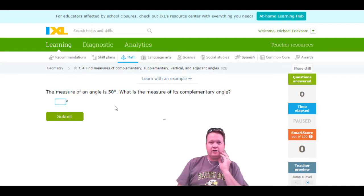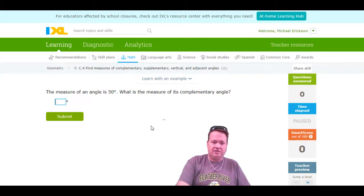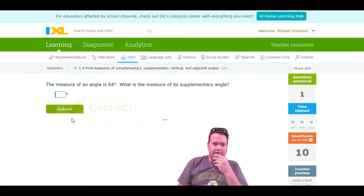The measure of an angle is 50 degrees. Complementary means it's going to add up to 90 degrees, so 50 plus 40 is 90. The complement will be 40, and we'll move on.